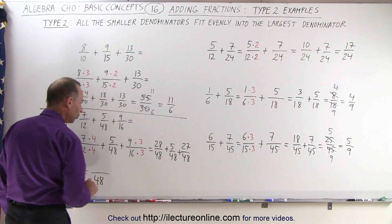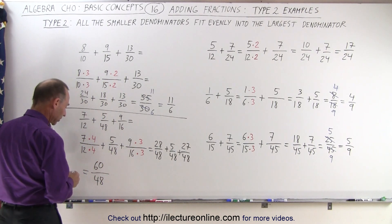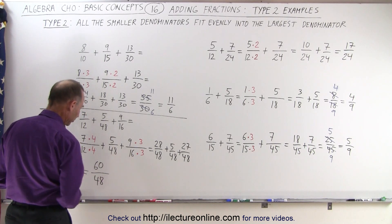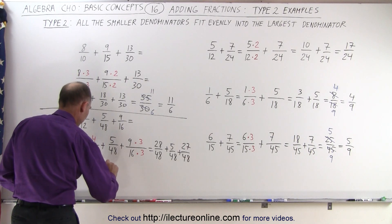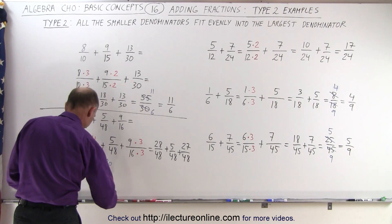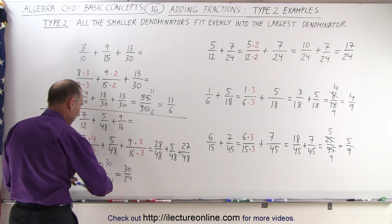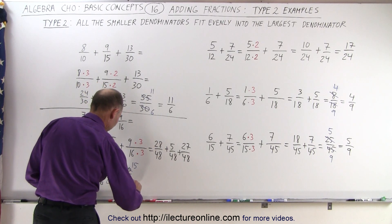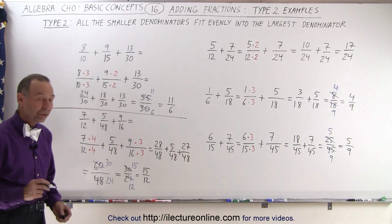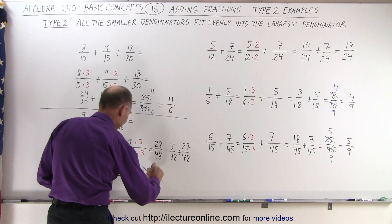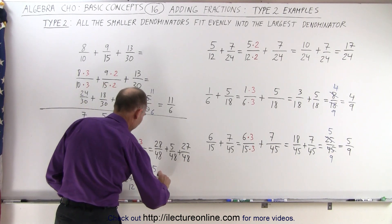So now I have three new fractions. The first fraction becomes 28 over 48, the second fraction remains at 5 over 48, and the third fraction becomes 27 over 48. Now all fractions have the same denominator, so I can simply add the numerators. The denominator will be 48, and the numerators: 5 plus 27 is 32, plus 28 is 60. Both 60 and 48 are even, so I can divide both by 2: 60 divided by 2 is 30, and 48 divided by 2 is 24, giving 30 over 24. I can continue reducing: 30 divided by 2 is 15, and 24 divided by 2 is 12, giving 15 over 12. Both are divisible by 3, so 15 divided by 3 is 5 and 12 divided by 3 is 4, and ultimately the fraction reduces all the way down to 5 over 4.